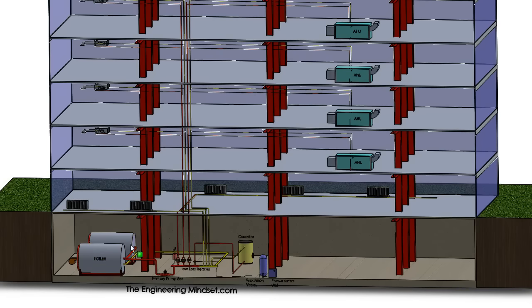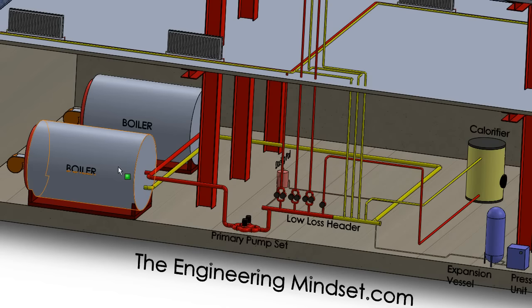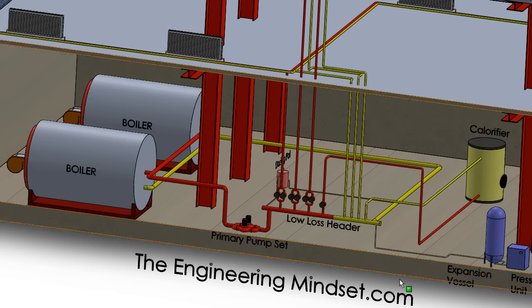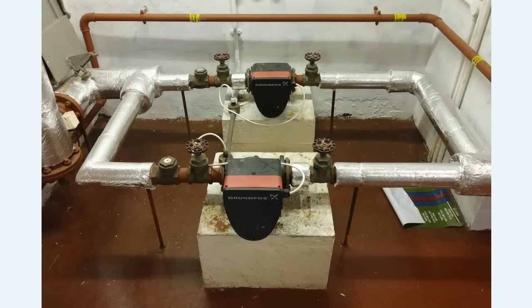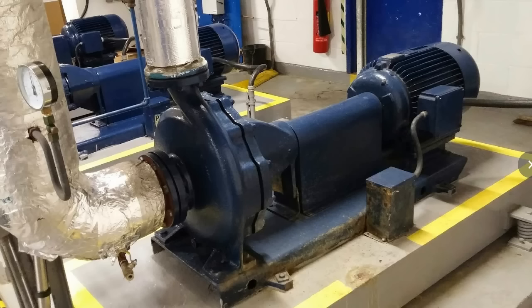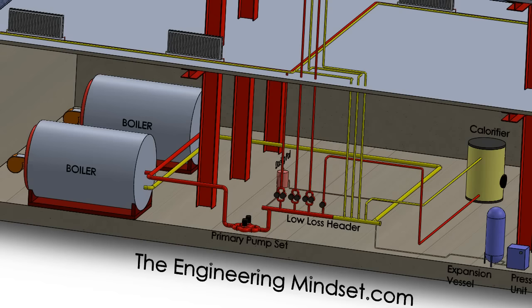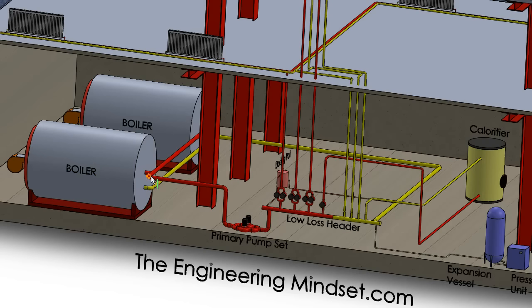So these boilers are the heat source for the heating system, and that heat is then pushed into the hot water of the heating system. One of the terms you'll come across in these sorts of systems is the terms primary and secondary circuits. As you can see here we've got the primary pump set — these two pumps here, which in the real world might look something a bit like this. These primary pumps will push the water around the system — around the primary side. That hot water leaves the boiler, enters into this pipe back here, is sucked by the pump and then pushed out into the low loss header, which we'll have a look at shortly.